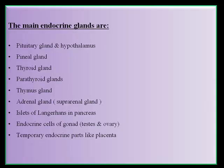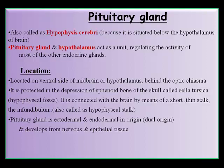The effect of hormones is slow and lasting, in contrast to nervous action which is quick and short-lived. Their excess or deficiency may lead to serious consequences. The main endocrine glands are: pituitary gland and hypothalamus, pineal gland, thyroid gland, parathyroid glands, thymus gland, adrenal gland (suprarenal gland), islets of Langerhans in the pancreas, endocrine cells of the gonads (testes and ovary), and temporary endocrine parts like the placenta.